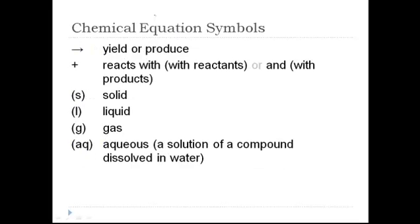Here are those symbols that you will see most frequently in a chemical equation. An arrow means to yield or produce some products. A plus sign, if it's on the left hand side of an equation with the reactants, it means reacts with, but if it's on the right hand side of an equation, it means and.